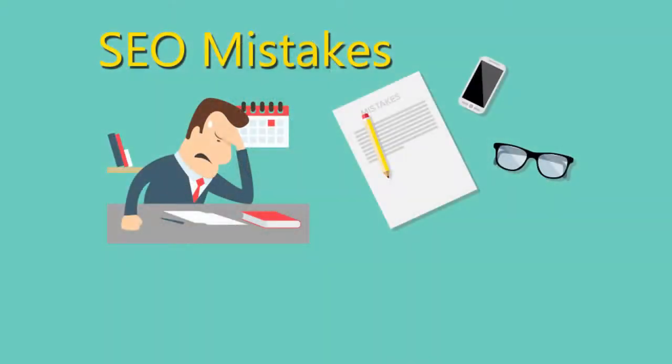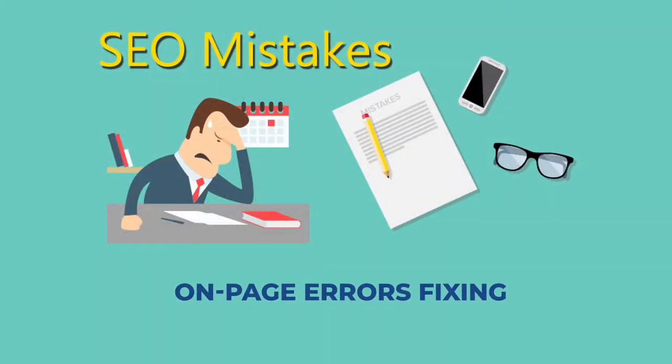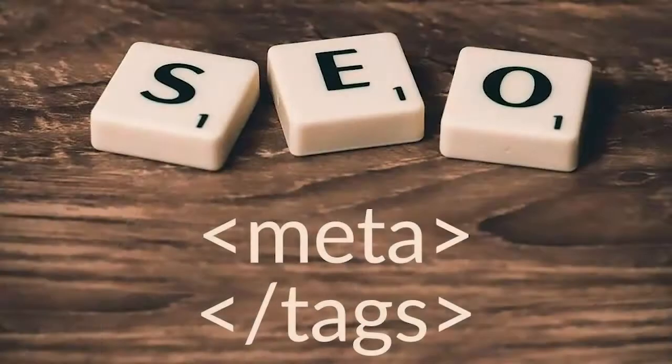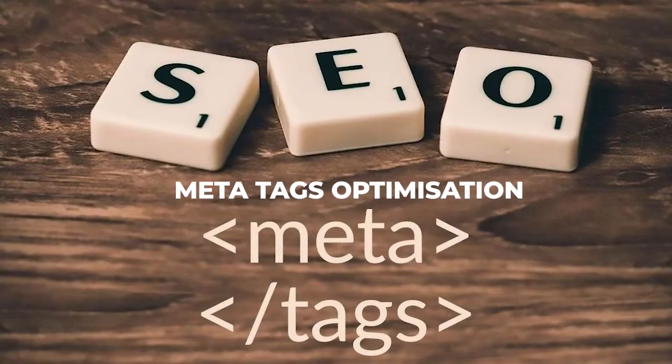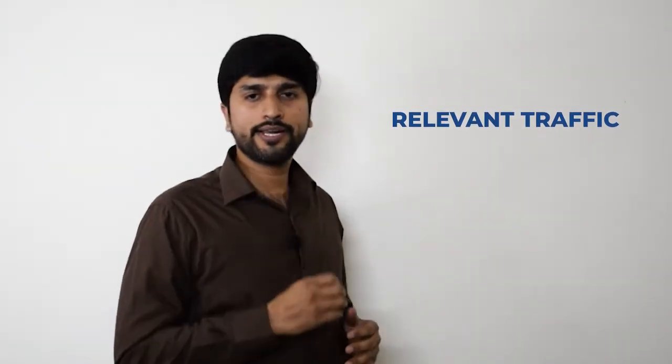Another important thing you will do at the start — and as part of your monthly process — is on-page error fixing. For this, you can use free and paid SEO tools to collect all errors like meta, visibility, content, linking, images, semantic issues, etc. The next thing is meta tags optimization. To improve the CTR of your client's website and drive relevant traffic, you can't neglect meta tags optimization. Listing meta tags under your SEO packages is essential for building strong visibility for the client's business.